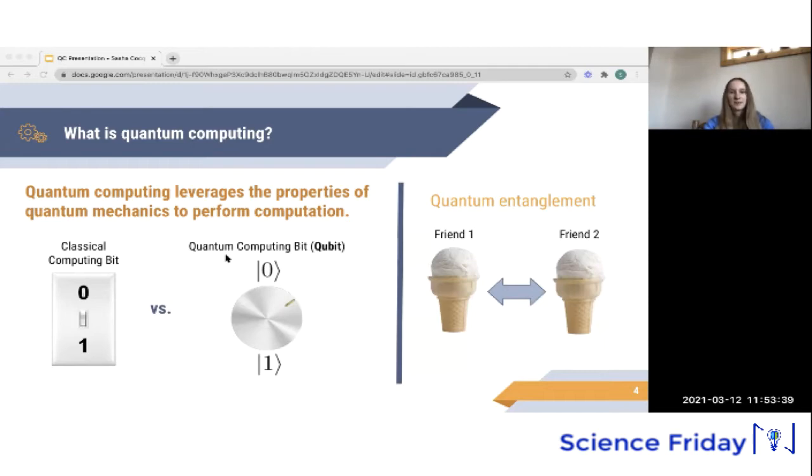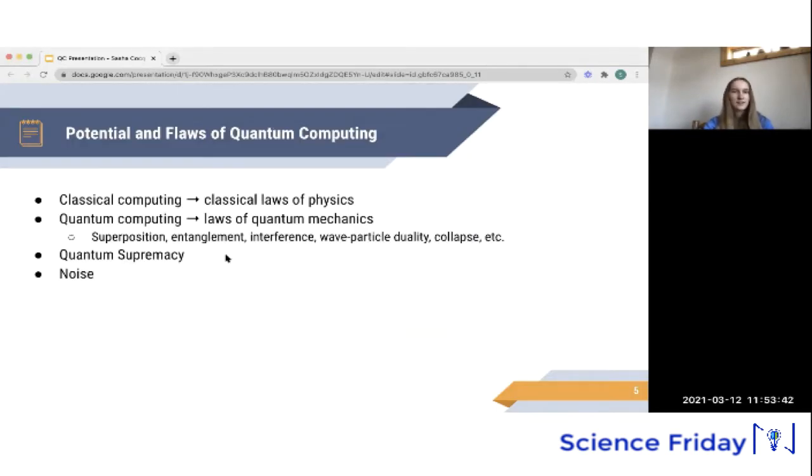Okay, so let's compare classical computing to quantum computing. What are the potential and flaws of quantum computing? So classical computing utilizes the classical laws of physics, while quantum computing unlocks the laws of quantum mechanics. So superposition is powerful because qubits can be in multiple states at once, meaning they can store more information than classical bits, which can only be in one state. Entanglement is a useful tool for computation because it allows for computation across multiple qubits simultaneously, and this is not possible in classical computing.